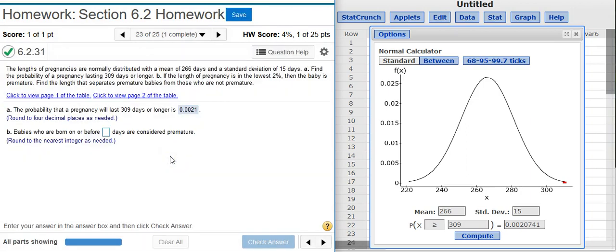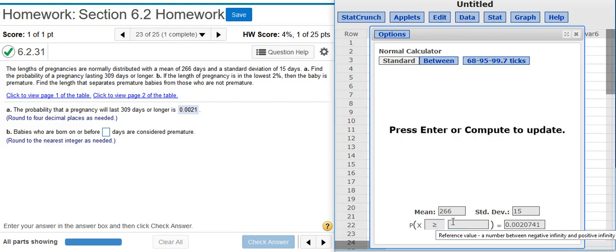Now Part B asks for the number of days in which a birth would be considered premature. So babies who are born on or before how many days are considered premature? And to do that, I go back to my distribution calculator. And this is the number we're looking for now. So we get rid of that.